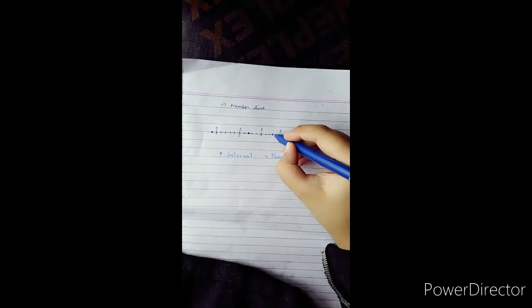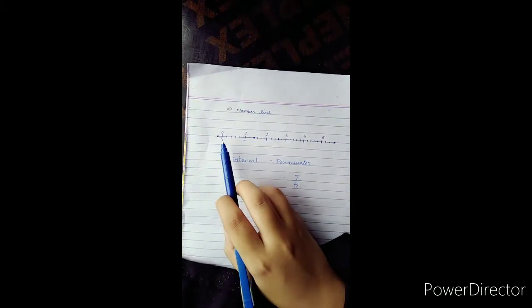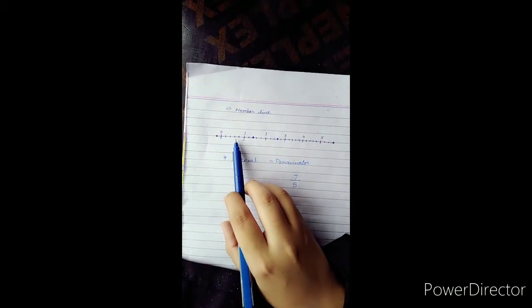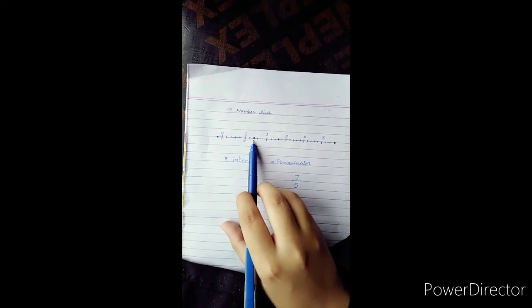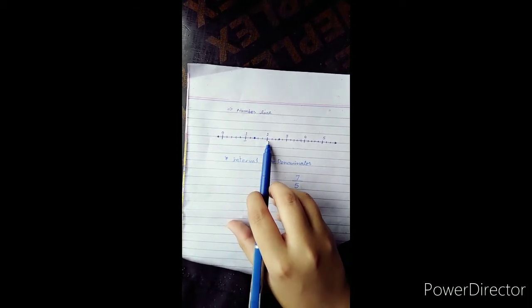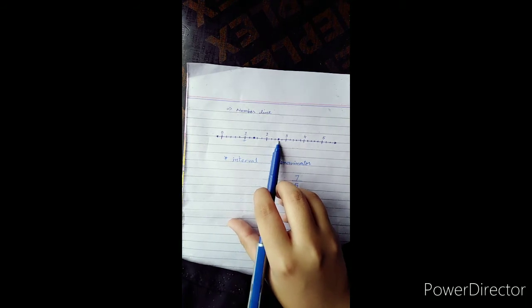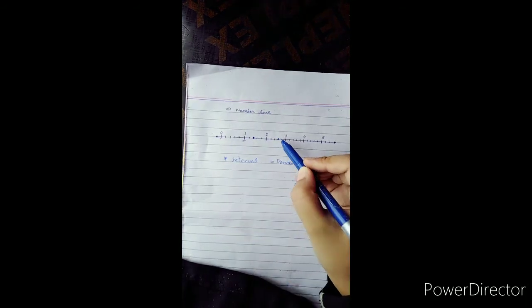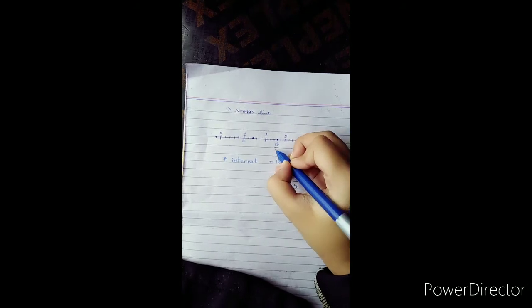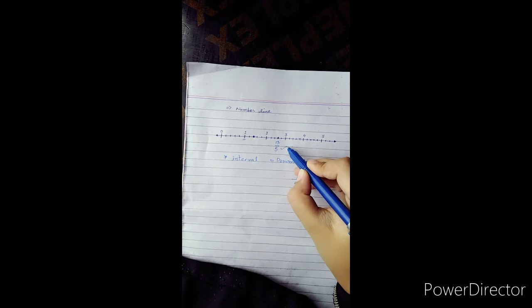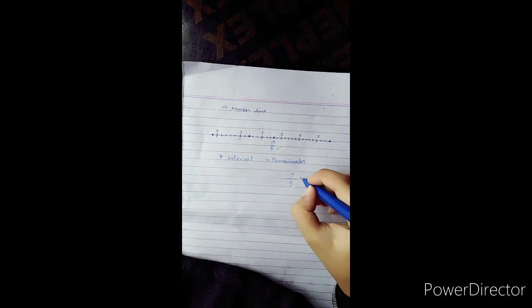So we will talk about another point like this. If we move here, we will count here 1, 2, 3, 4, 5, 6, 7. This is my first point, so we will not break here. So we will count here, 8, 9, 10, 11, 12, 13. So this is my second point, 13. What was the denominator? 13 by 5. Now we will see that in the last lecture we have proper and improper fraction. This is an improper fraction.